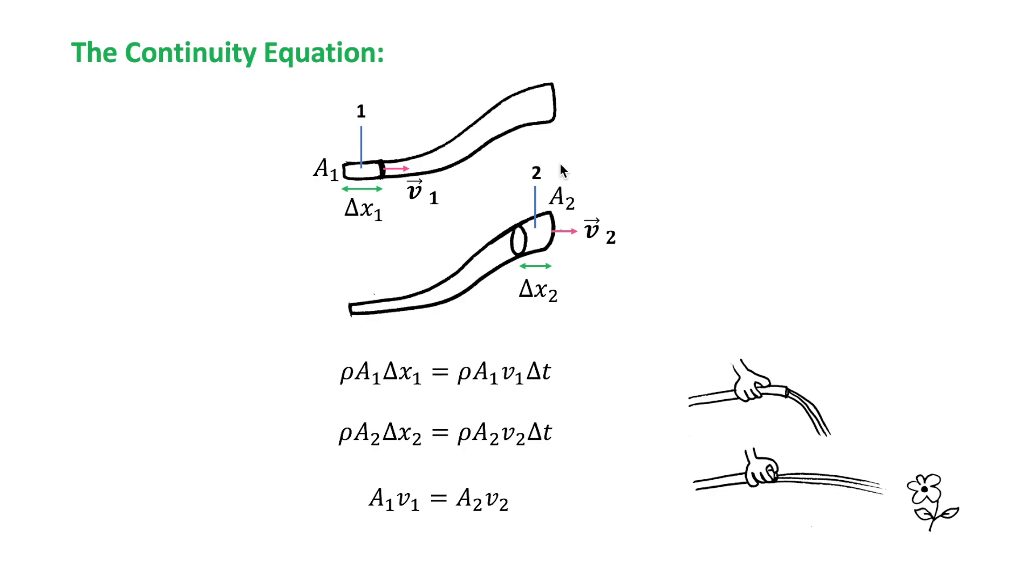So, the mass passing 1 is equal to rho A1 delta x1, because this is the volume here, is equal to rho A1 V1 delta t, and the mass passing point 2 is rho A2 V2 delta t, and this gives A1 V1 is equal to A2 V2.